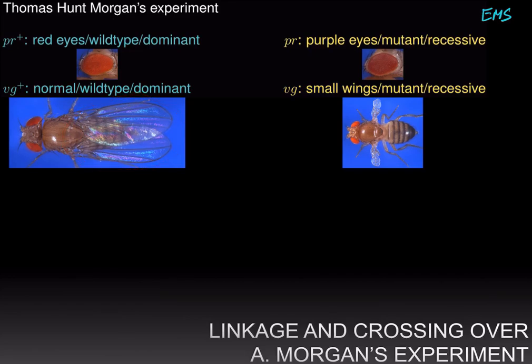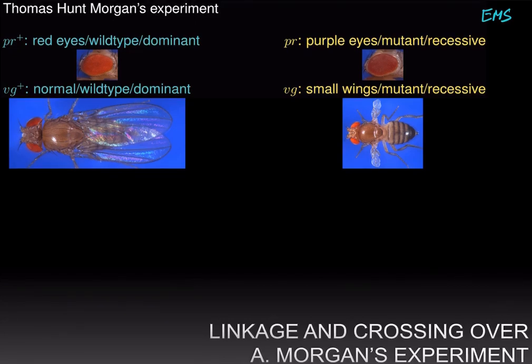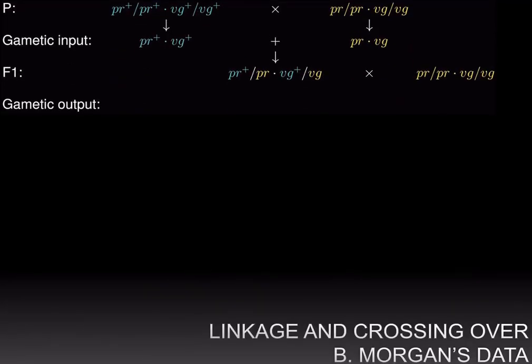In VG/VG flies — vestigial homozygous recessive flies — you have very small or vestigial wings. The mutant allele for eye color is recessive, so you must be PR/PR to have purple eyes. Morgan crossed a pure breeding wild type line, homozygous for the plus alleles of both purple and vestigial, to a fly that was homozygous recessive for the mutant alleles of both traits — sometimes called a double mutant.